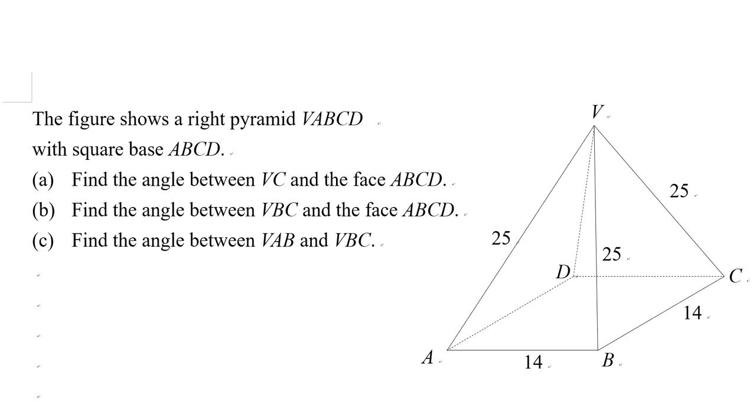In this question, the figure shows a right pyramid VABCD with square base ABCD. The length of the square is 14 and the slant heights are 25. The meaning of right pyramid is that the V vertex, when projected to the horizontal ground to the base ABCD, goes to the middle, the center point of this square.